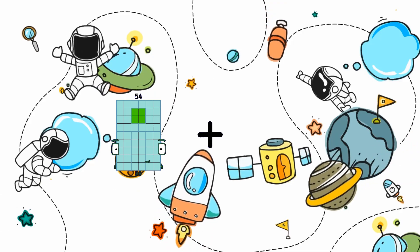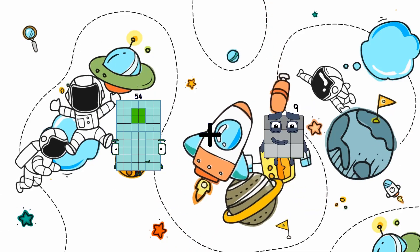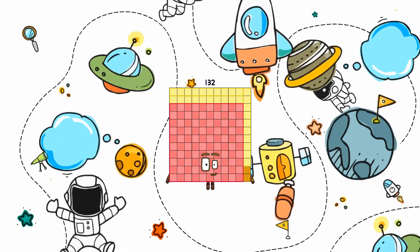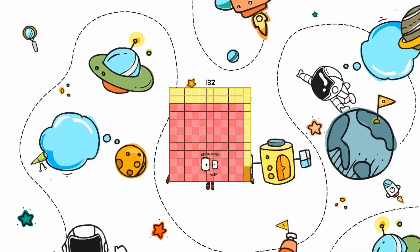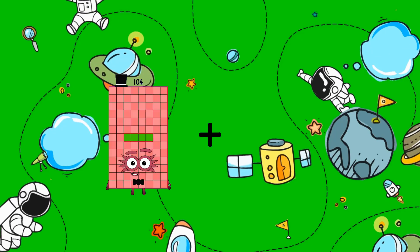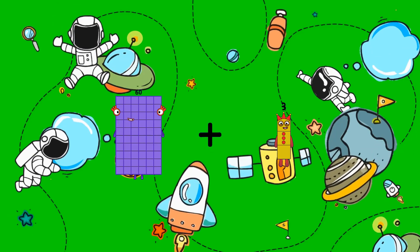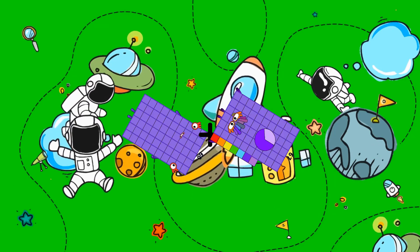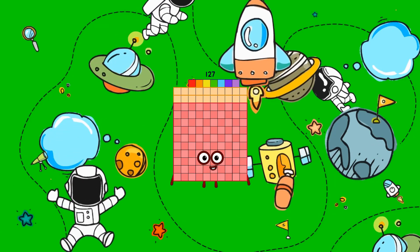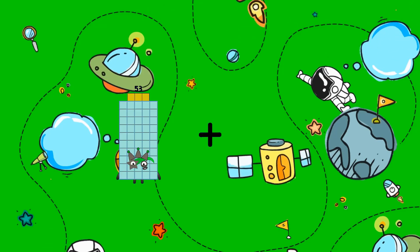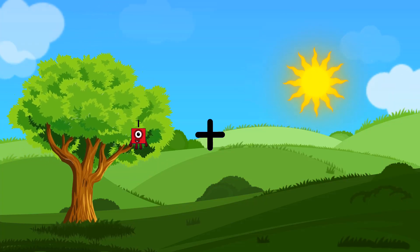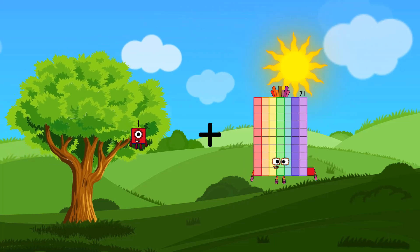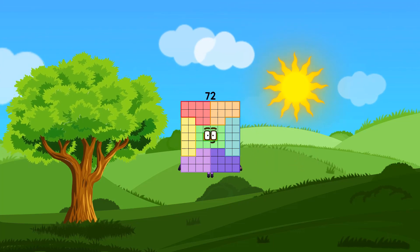54 plus 78 equals 132. 60 plus 67 equals 127. 1 plus 71 equals 72.